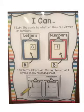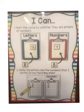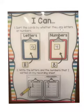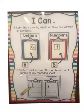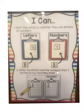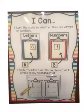This is your ICANN card and it says: I can sort the cards by whether they are letters or numbers. This says letters and this says numbers. You will write the letters and the numbers that you sorted on your recording sheet, and here is your recording sheet.